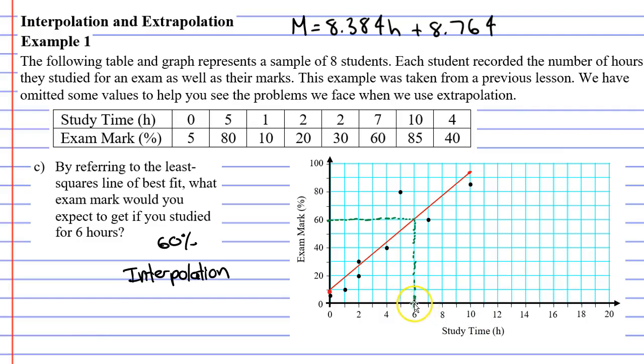And we can also see that our line of best fit which ranges between 0 and 10 exists at this point where our study time is six hours.